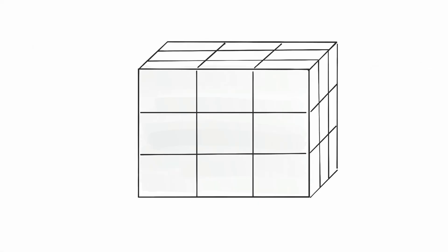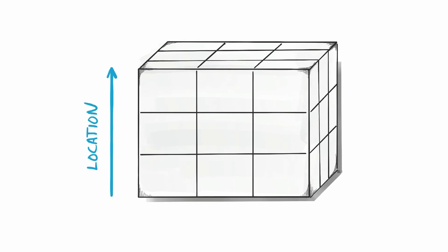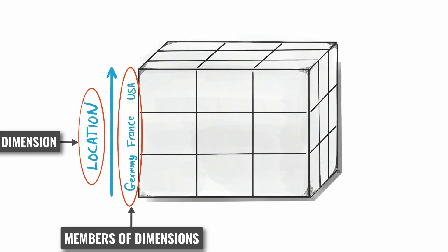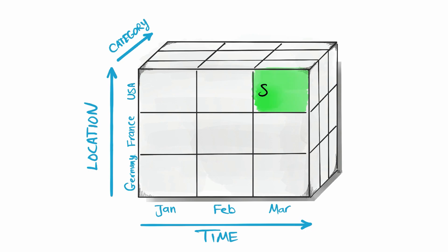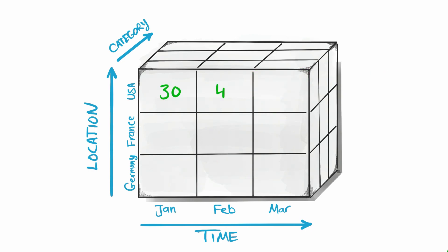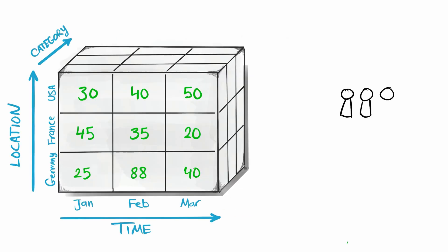For example, let's take a cube of sales with three dimensions. The first dimension is locations, with members USA, France, and Germany. The second dimension is time, with members January, February, and March. The third dimension is categories. Inside the cube, we have the measure: sales. So now our cube is ready with dimensions and a measure.